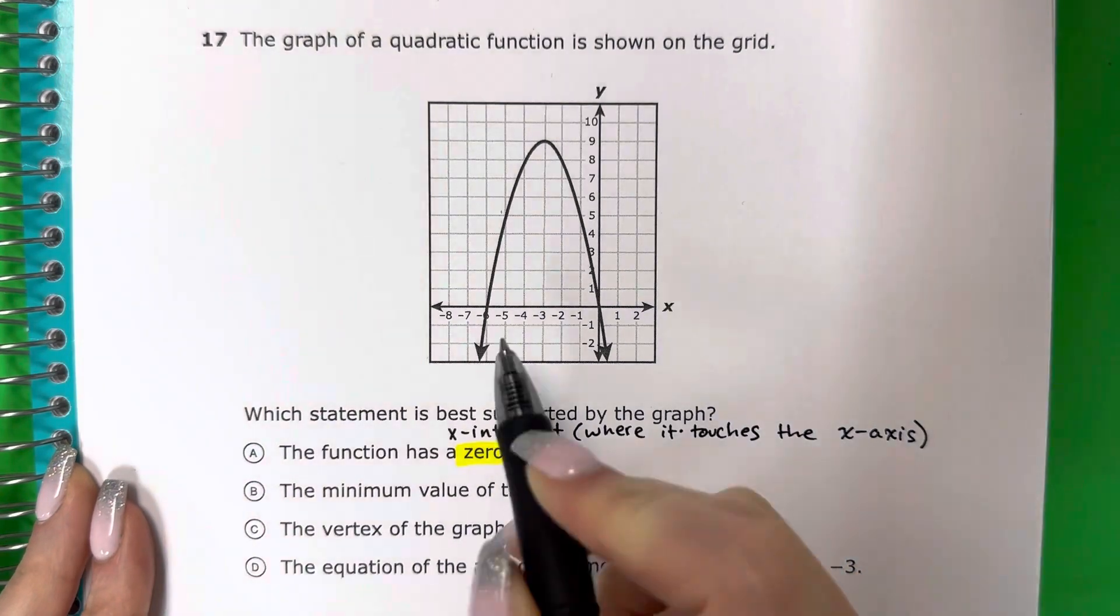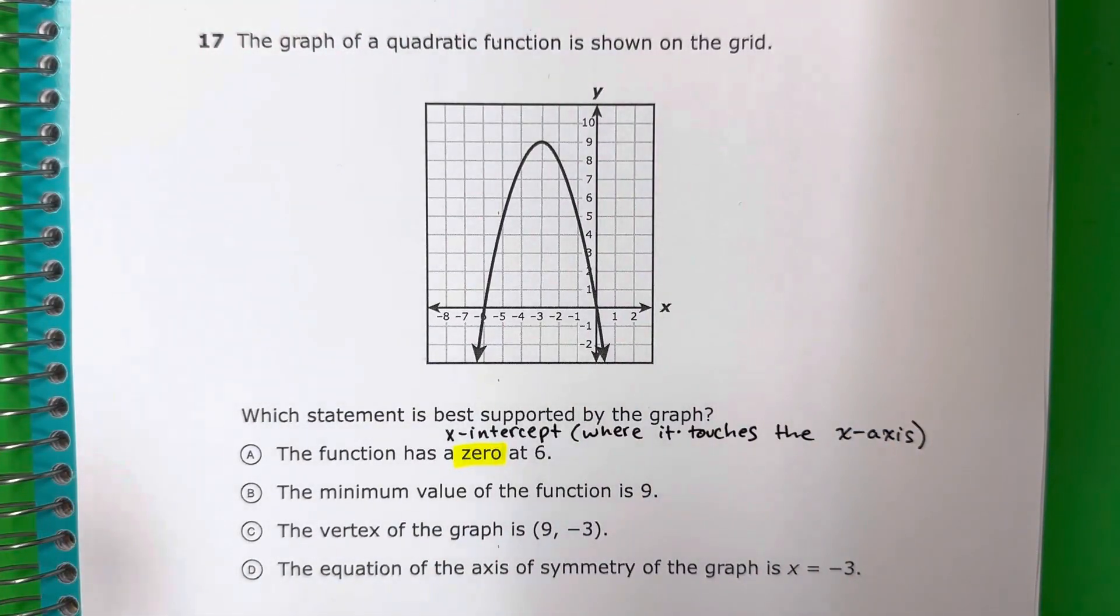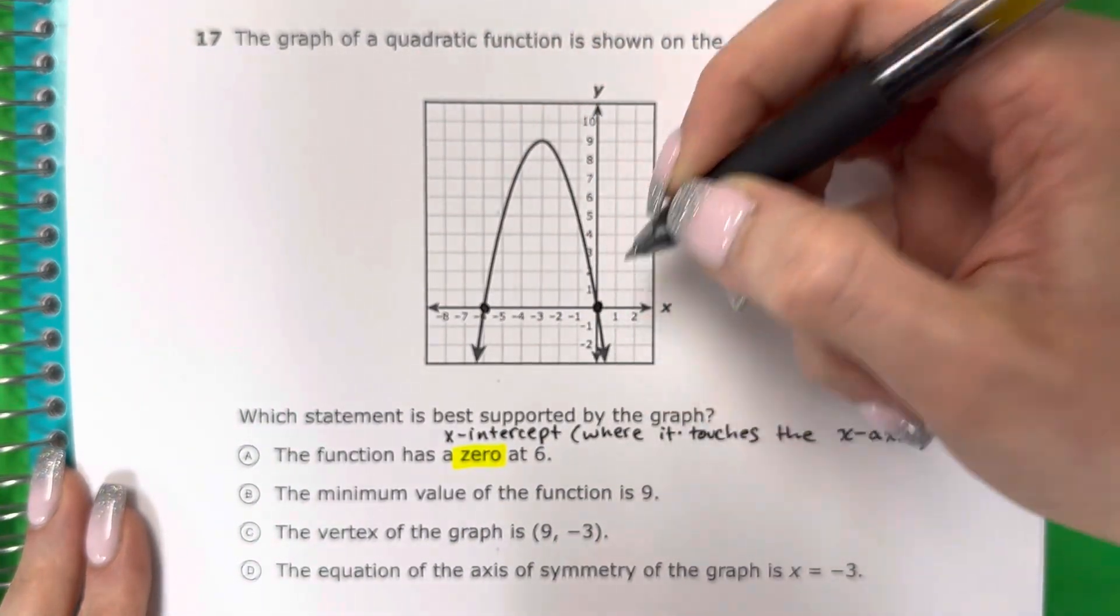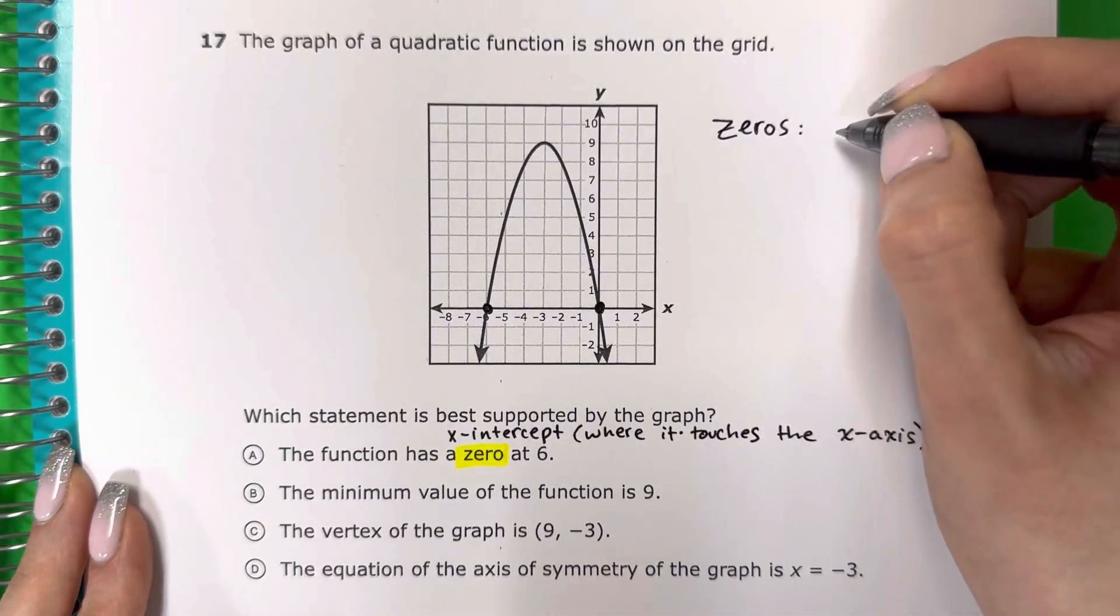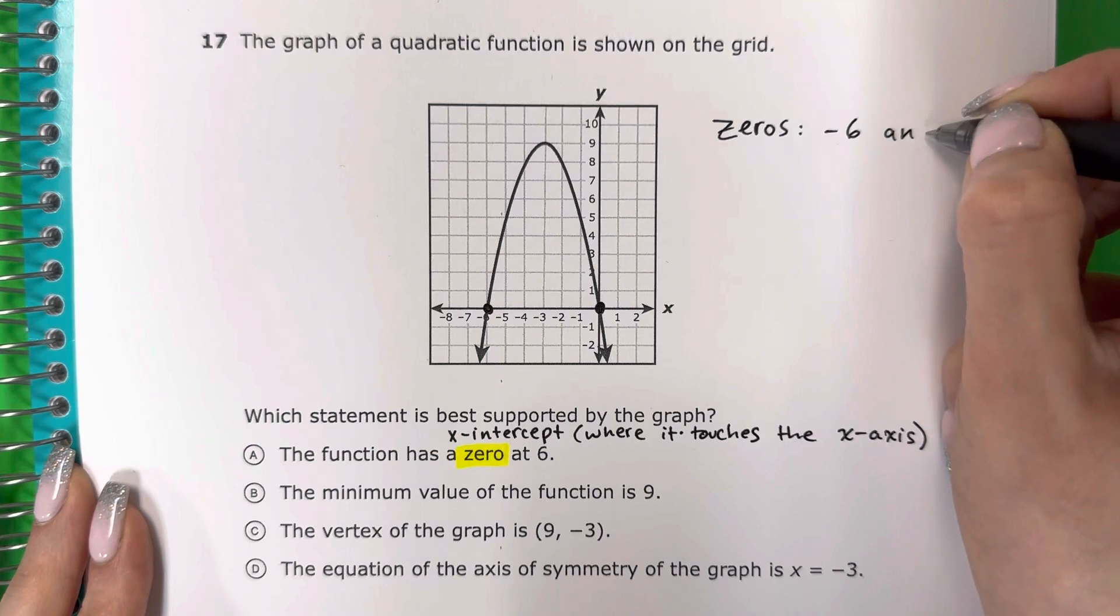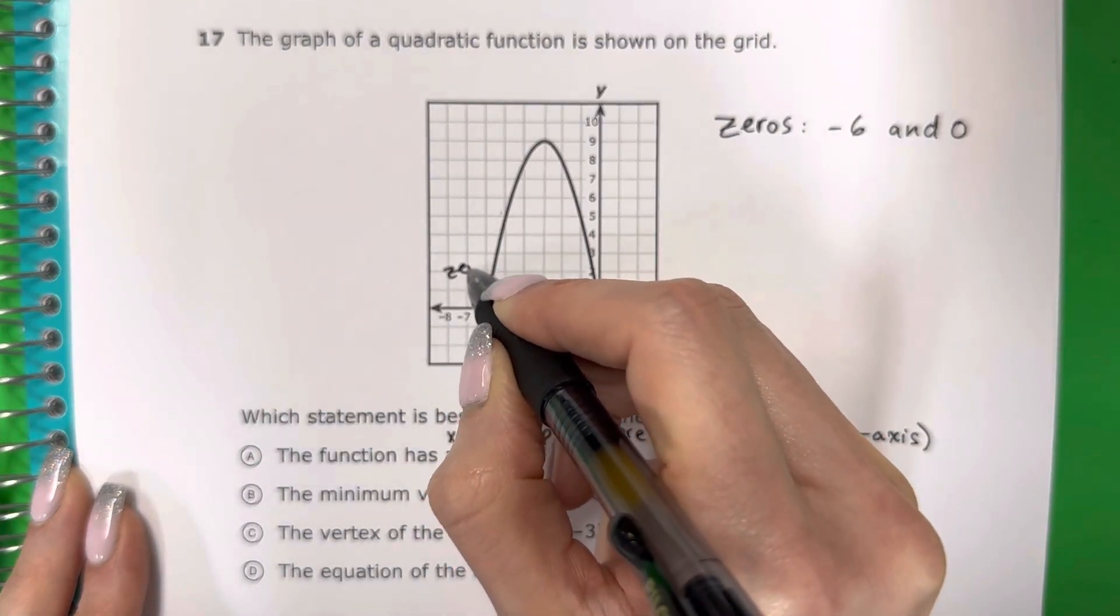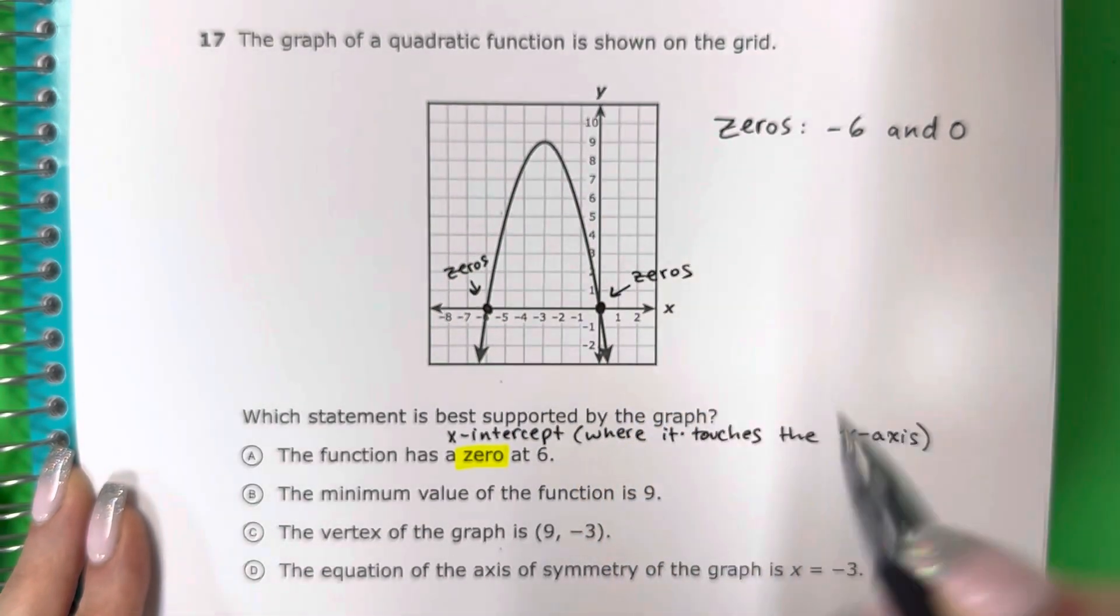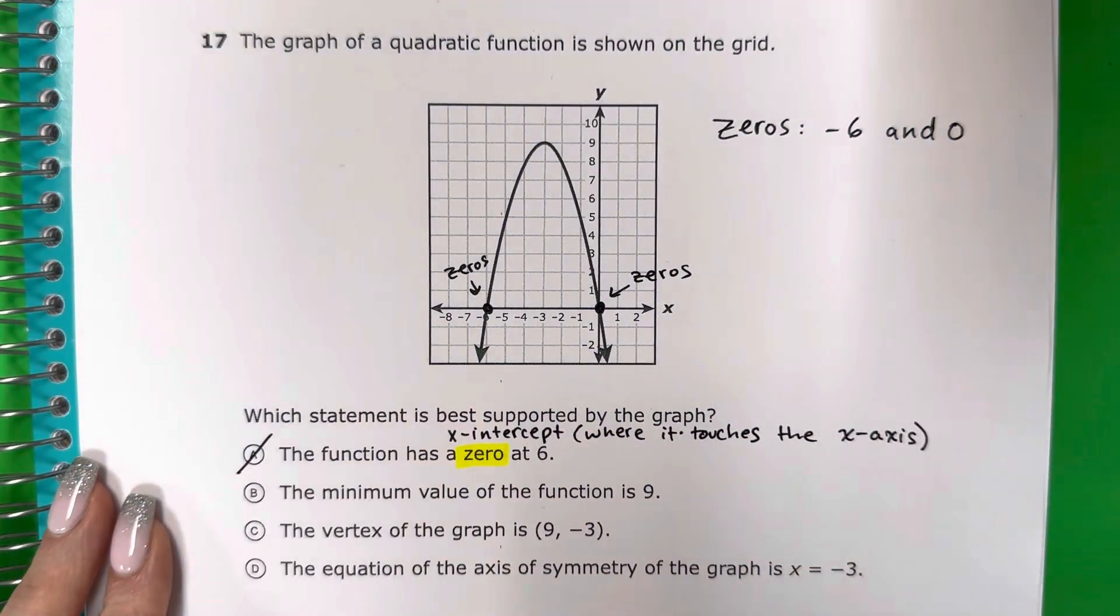So let's take a look at where does this parabola touch the x-axis. It looks like it touches at negative 6 and 0. So here the zeros are at negative 6 and 0. These are the zeros right here. So is that true? No, I want a negative 6 and a 0. So A is not correct.